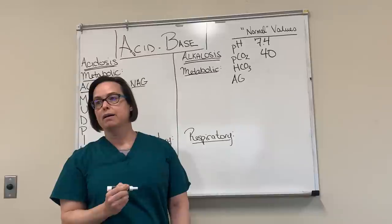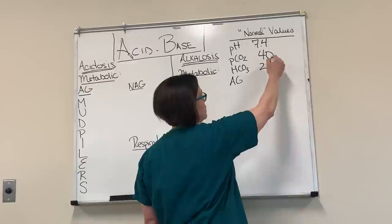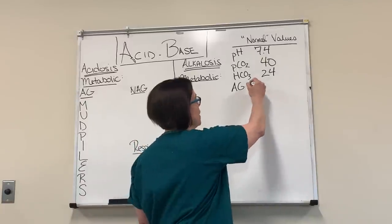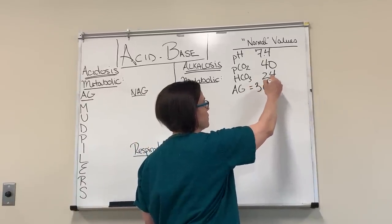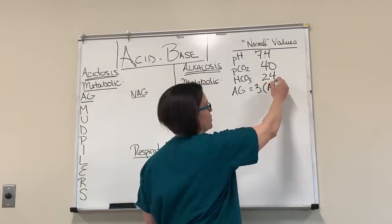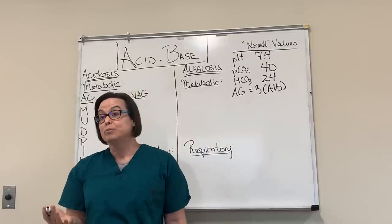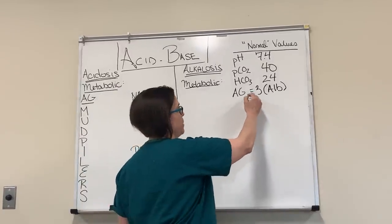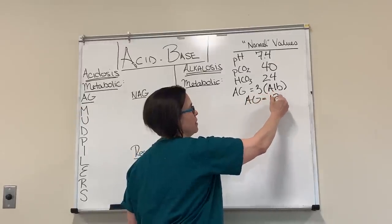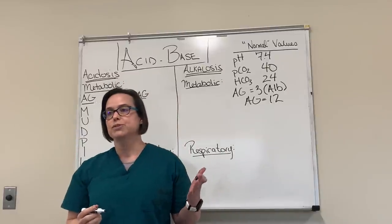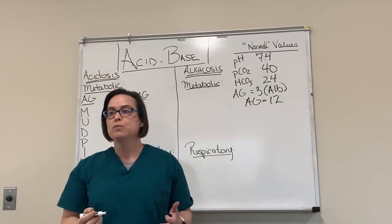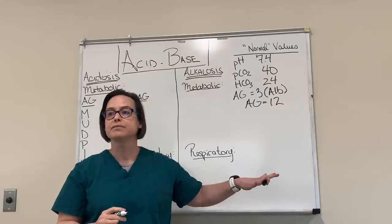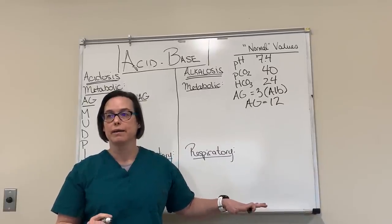How about your normal bicarb? 24. And how about your normal anion gap? 12. So I'll put here three times your albumin, and a normal albumin is four. You're absolutely right that your anion gap normally is 12, but in a lot of critically ill patients our albumin drops, in which case we want to alter what we think of as our normal anion gap. But for the purposes of today's talk, we're going to use 12 as our normal anion gap.